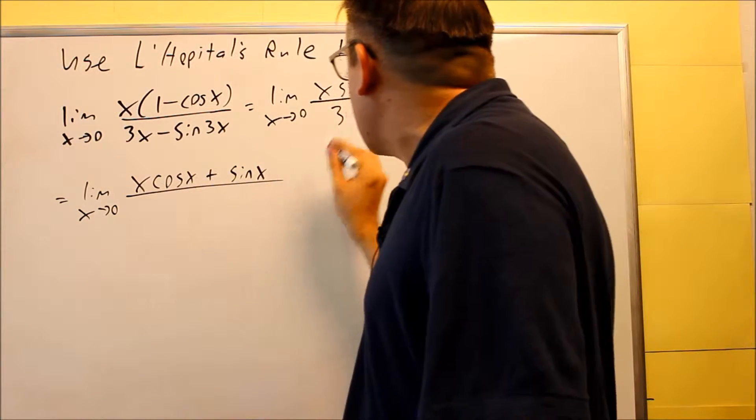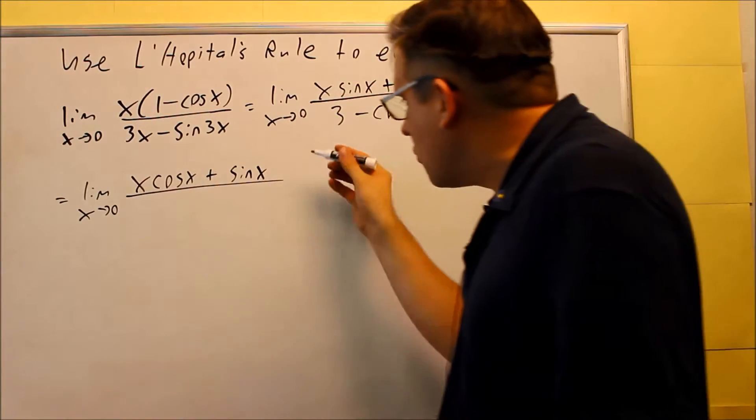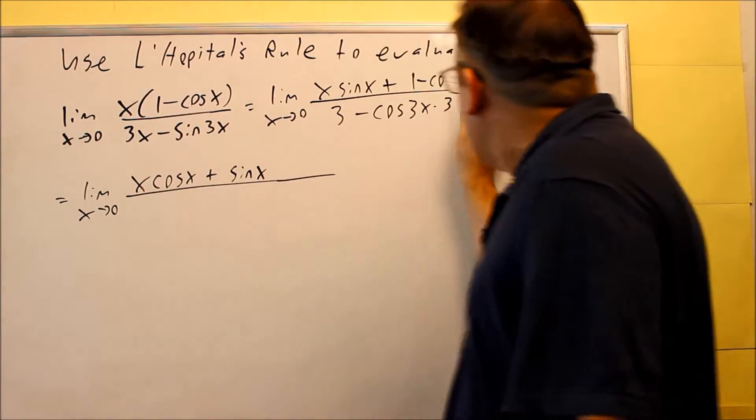Derivative of sine is cosine, plus the second piece, which is sine x, and then times the derivative of the first. Derivative of x is going to be 1, so we don't need to show that.